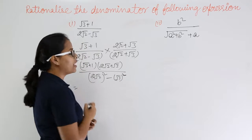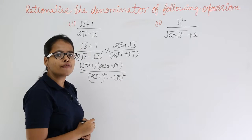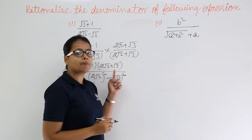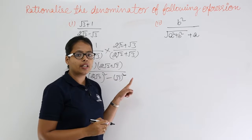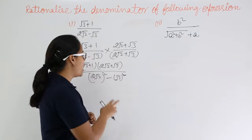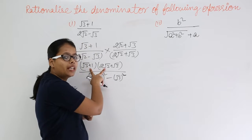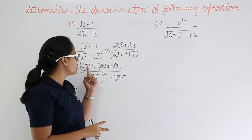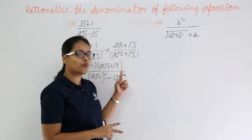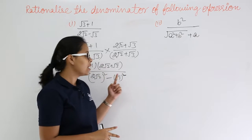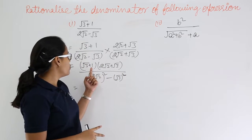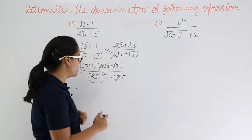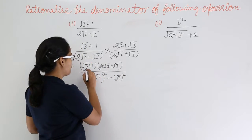In the numerator, this is the form of a plus b times c plus d. So what you will do — as I have already discussed this identity — you will multiply the first value with the two terms of the second bracket, then multiply the second value with those two terms as well.